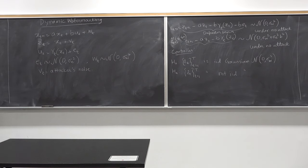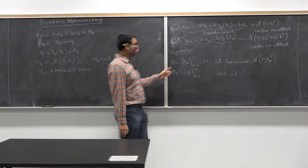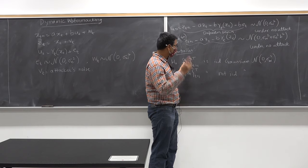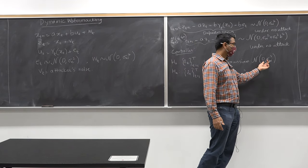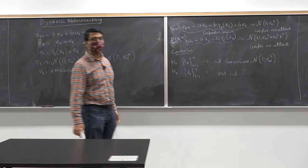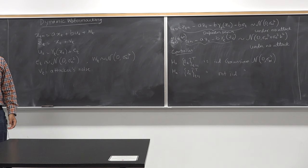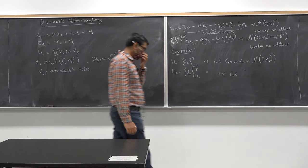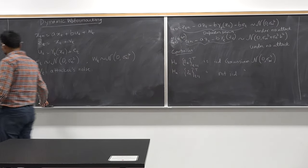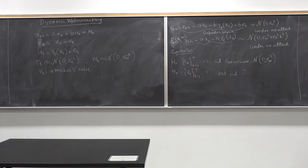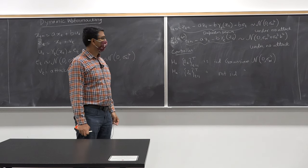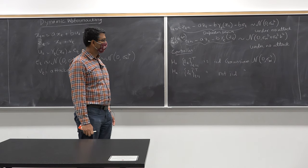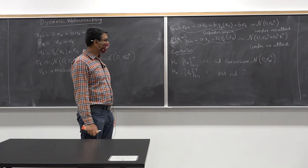We talked about hypothesis testing. Technically you can use log likelihood, but what's the problem with log likelihood? You need to know the post-change distribution to use a log likelihood based detection scheme. The problem here is I don't know what the post-change distribution is, because I am not making any assumption on v_t. So somehow you have to come up with a scheme that looks only at the sequence epsilon_t and figures out whether it looks like a Gaussian distribution with mean zero and variance sigma_w squared.